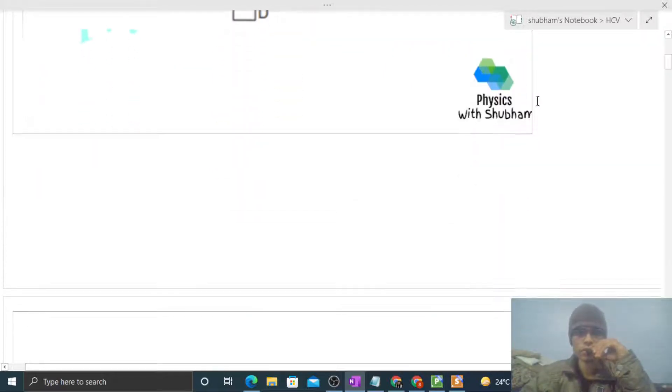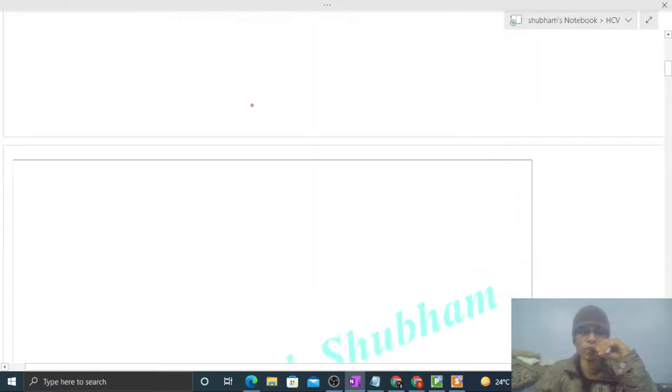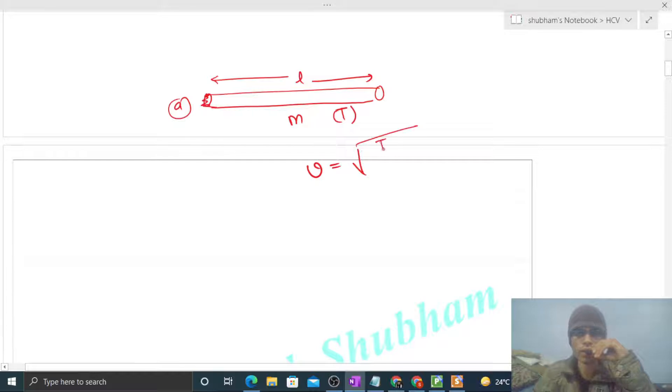So first let's talk about how to find out the speed of a transverse wave in any string. Let's say we have a string with length L, cross-sectional area small A, mass M, and tension T. Then the speed of transverse wave in the string is under root of T divided by mu. This mu is nothing but mass per unit length.